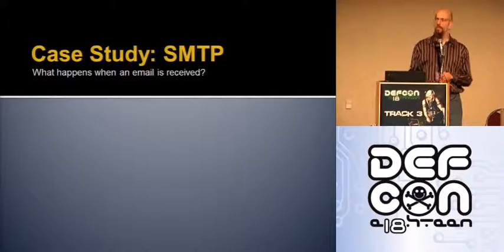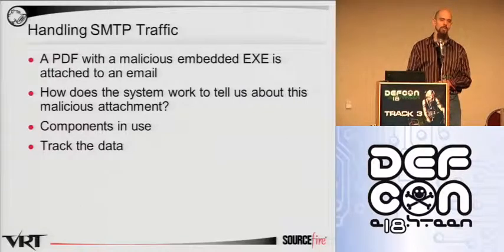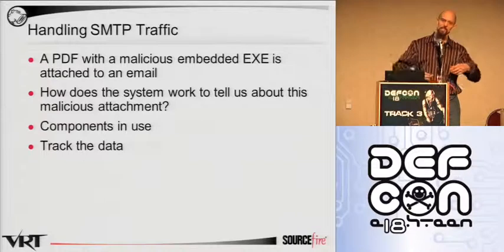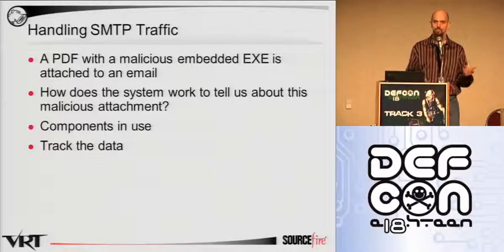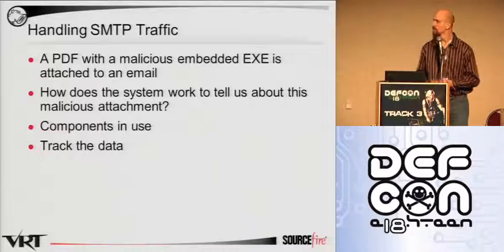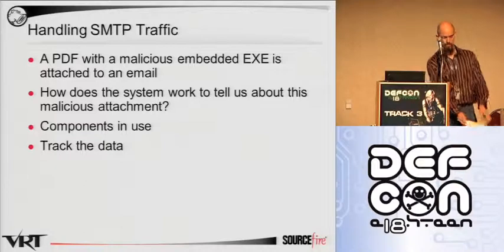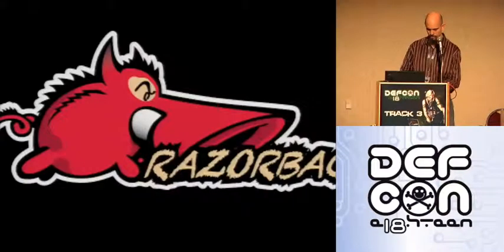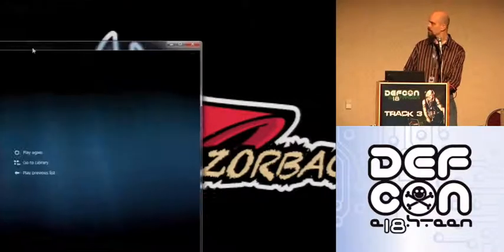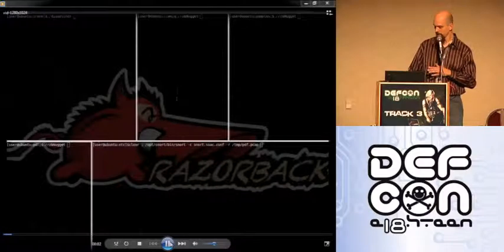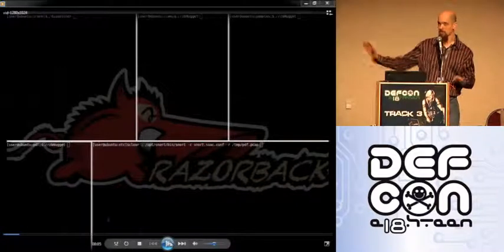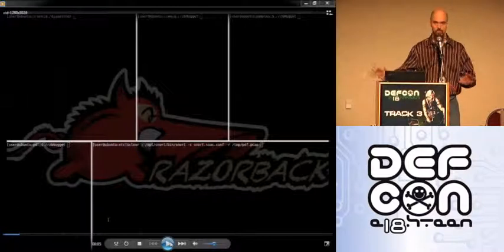For this demo example, we're going to use SMTP traffic. We have a PCAP of an email — SMTP traffic — where somebody is sending an attachment that is a PDF which has an embedded EXE file, and that EXE file contains a Trojan. This is a great opportunity to show how we can have multiple pieces, each one doing its own special part and providing an alert. There's a lot of information on screen and the font's tiny, so don't worry about reading it — I'll describe what each box is and what's being displayed.